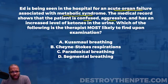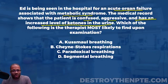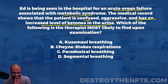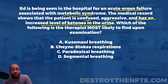What I want to slow down on is that the patient has increased levels of ketones in the urine. Why would someone have increased ketones in the urine? Physiologically, if you have high ketones in the body, it's typically because the body is breaking down a higher level of fats for energy.